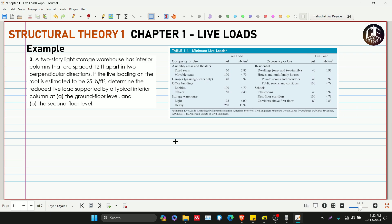Hello guys, welcome back to CBOX Tutorial Channel. This is our example number three for Chapter 1 Live Loads of Structural Theory 1. A two-story light storage warehouse has interior columns that are spaced 12 feet apart in two perpendicular directions. If the live loading on the roof is estimated to be 25 pounds per feet squared, determine the reduced live load supported by typical interior column at A, the ground floor level, and at B, second floor level.